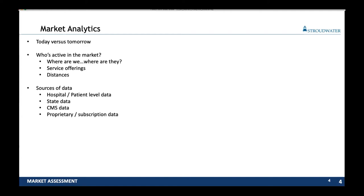Sources of data really become the biggest piece in starting to look at market analytics. There are lots of great places to get data, starting with your own facilities. Hospital and patient-level data is the absolute best, at least as it concerns the folks you're providing care for today, and there's a tremendous amount of information inside that data that can be mined. Other sources include state data — many states have inpatient databases where we understand for all payers who has what market share down to a DRG level, down to a zip code level. That works really well. CMS — we don't have it for all payers, just for Medicare — gives us access to similar levels of granularity.